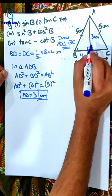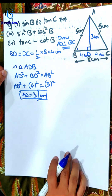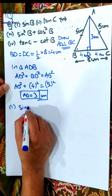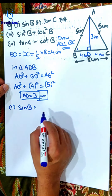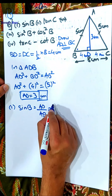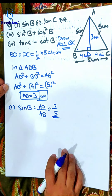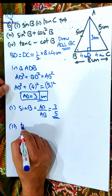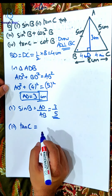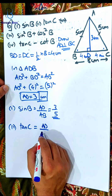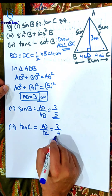So we write AD as 3, BD as 4, AB as 5. Now that we've got all the sides, let's quickly hit at the ratios. Sin B — opposite upon hypotenuse — that is AD upon AB: 3 by 5. How many got this correct? Good job. Second part, tan C — opposite upon adjacent — AD upon DC: 3 by 4.